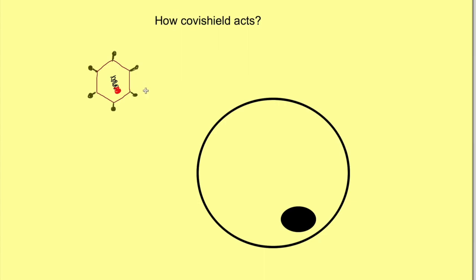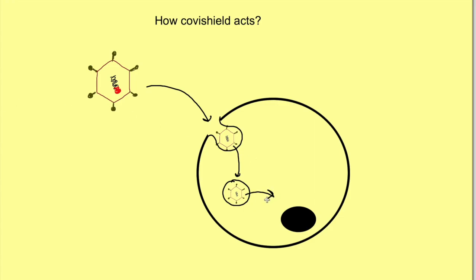Once this adenovirus is inserted in the form of the vaccine into the body, it goes and attaches to the cells, and the cells take up this virus inside. It moves out from there and inserts its genome into the nucleus of our cells. As all viruses use our body's cell machinery — the nuclear machinery — to produce proteins, once this DNA is inserted into the nucleus, it is transcribed into messenger RNA, and from this messenger RNA, ribosomes produce proteins — specifically the spike proteins.